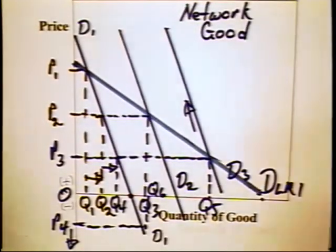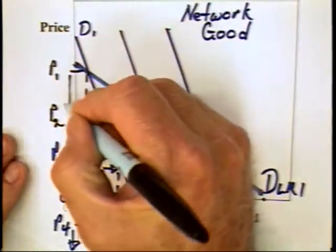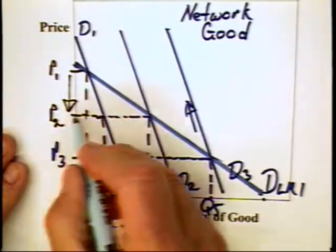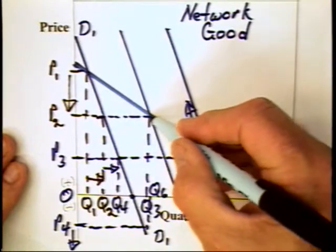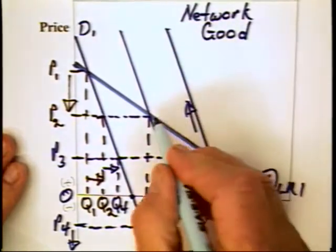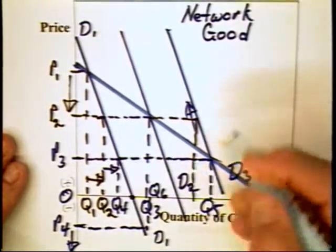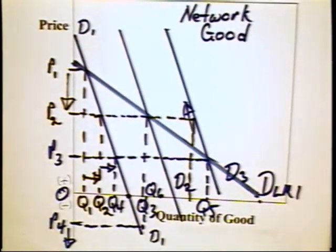Return to our graph. Here, let's suppose that when we lower the price from P1 to P2, instead of the demand curve going out to D2 because of network effects, suppose that the demand curve goes all the way out to D3 as a consequence. Well, in that case, then the network effects causes the demand curve to have an elasticity that looks something like this.